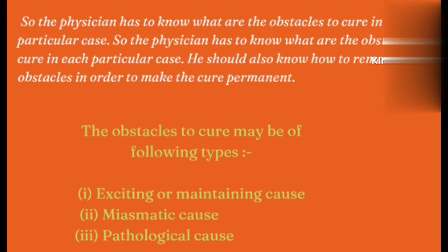The physician has to know what are the obstacles to cure in each particular case. So a physician must know what obstacles are present and working in each particular case — this knowledge of obstacles to cure is essential, and it is also discussed in aphorism number 3. You should also know how to remove these obstacles in order to make the cure permanent.